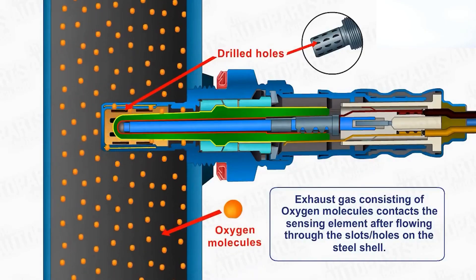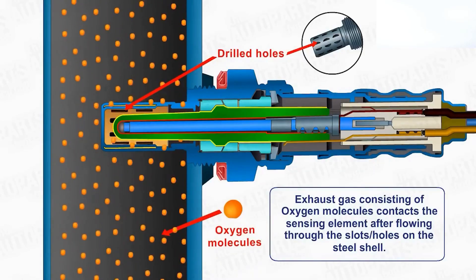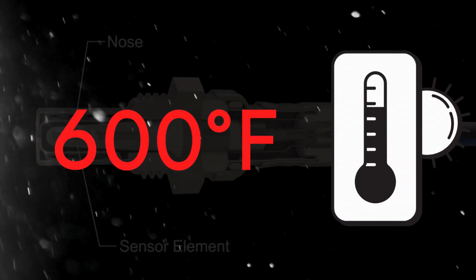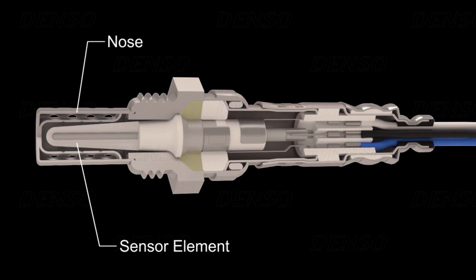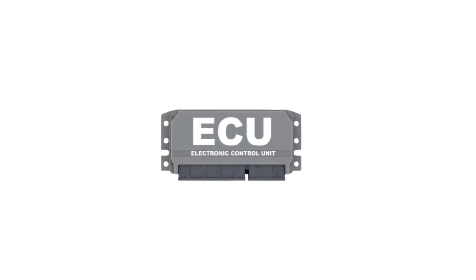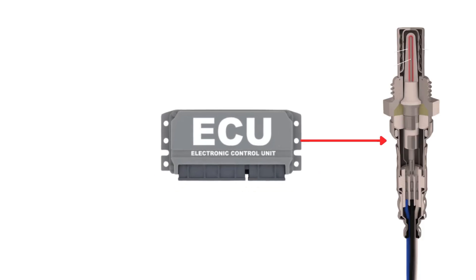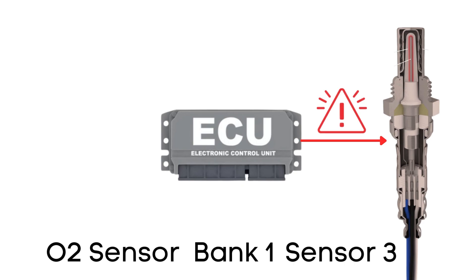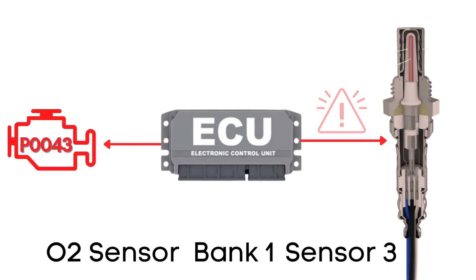An oxygen sensor won't function correctly until it's heated to a certain temperature — around 600 degrees Fahrenheit for conventional sensors. That's where the heater circuit comes in. It's designed to warm up the sensor quickly so it starts working sooner. The ECU regularly checks the heater circuit to ensure it's functioning correctly, and if it finds that the voltage in the heater circuit for bank 1 sensor 3 is lower than expected, it will trigger the P0043 code.